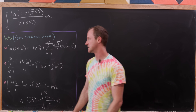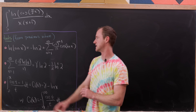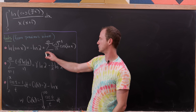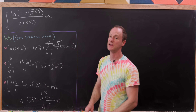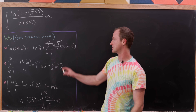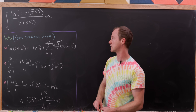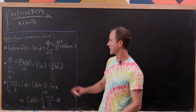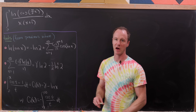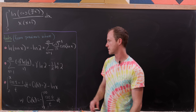Our first tool is that the natural log of cosine of x equals minus natural log of 2 plus the sum as n goes from 1 to infinity of (−1)^(n+1) / n times cosine of 2nx. That's a mouthful but it will be useful.